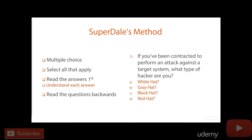Now I'll read my question from the end first: 'What type of hacker am I?' That makes sense. The reason I say to read the question backwards is because many times questions start off with a lot of irrelevant information — like 'Julie has a blue mouse pad and she likes long walks on the beach' — and it's not until the last sentence that you figure out exactly what they're looking for. So they want to know: 'If you've been contracted to perform an attack against a target system, what type of hacker are you?' Contracted means this is legitimate, so I'll go with white hat.